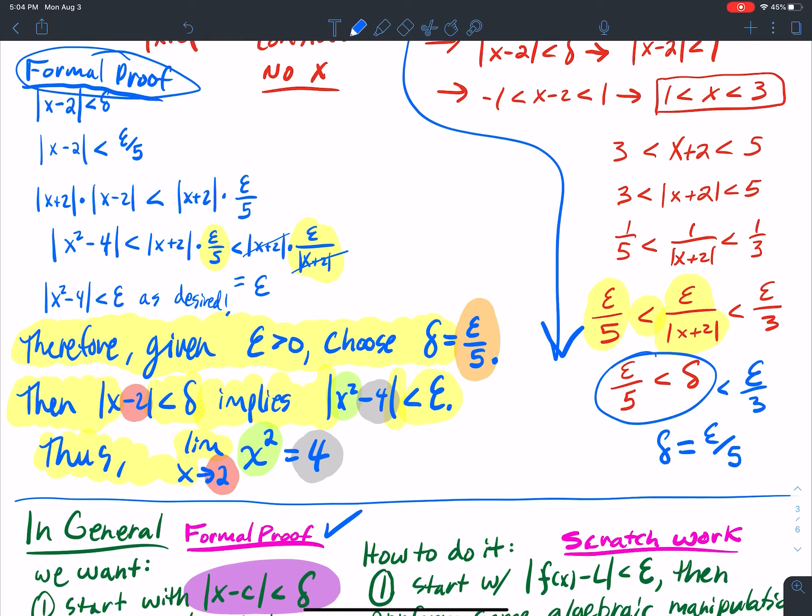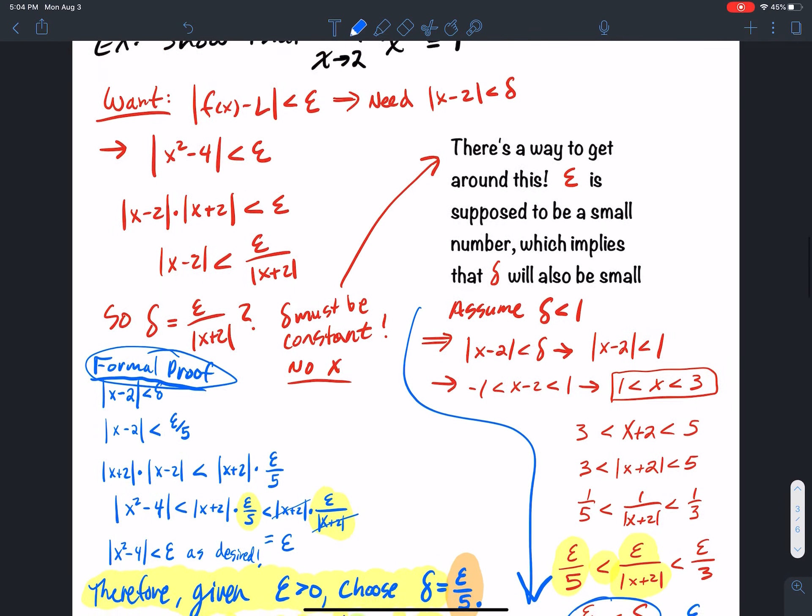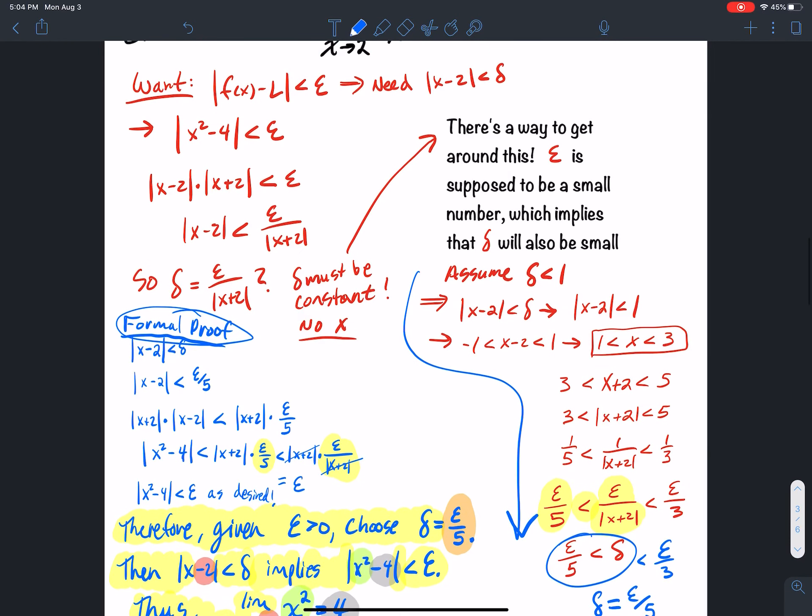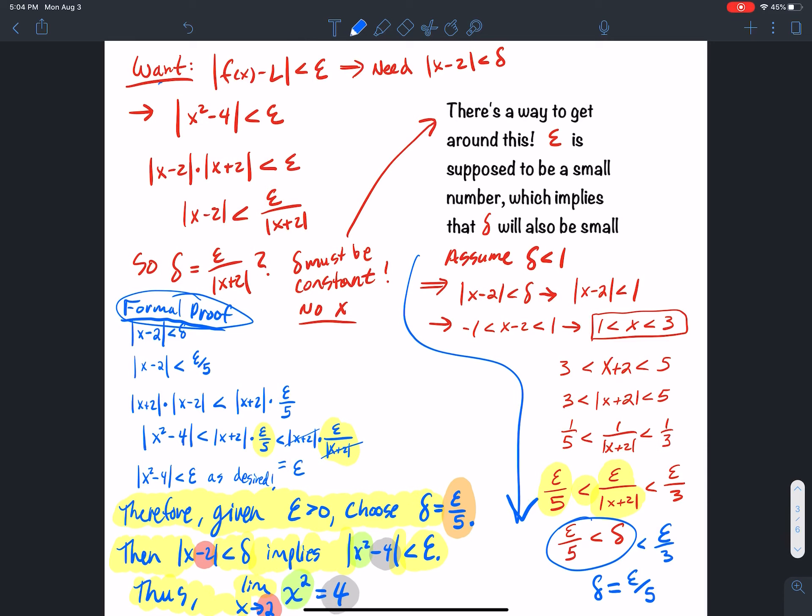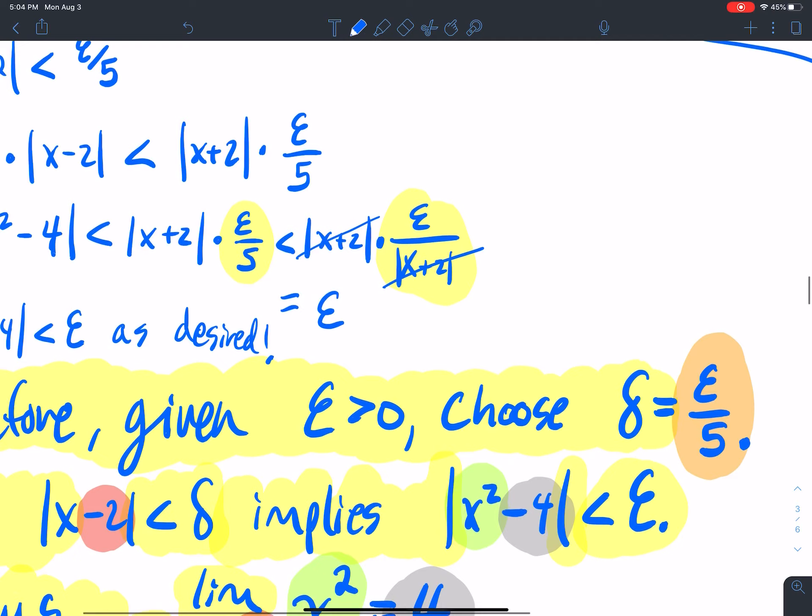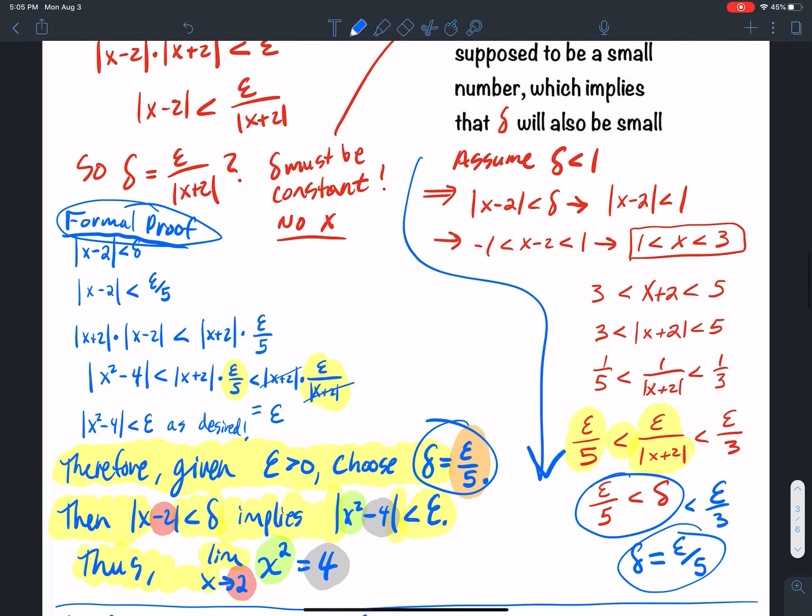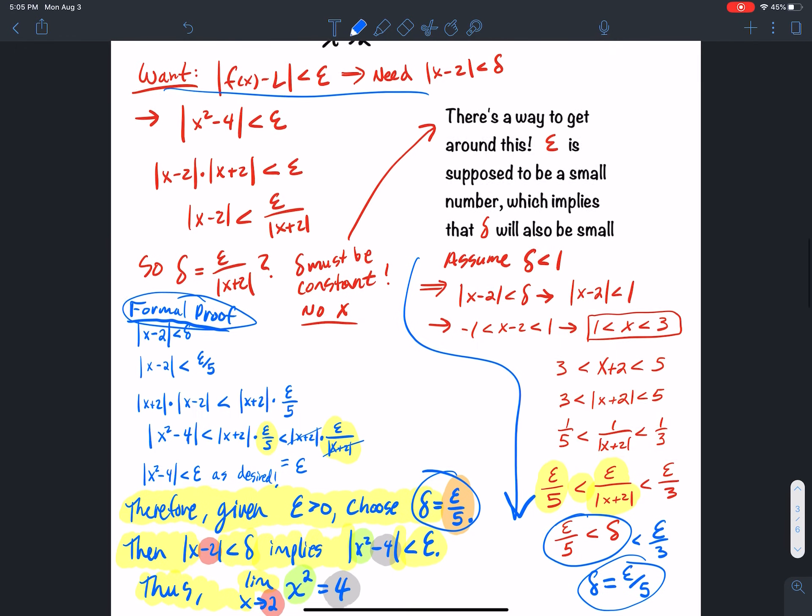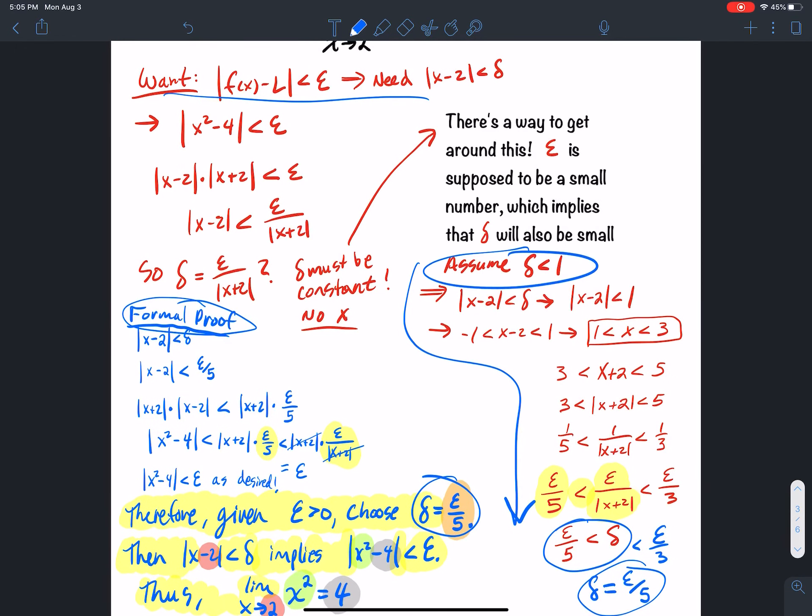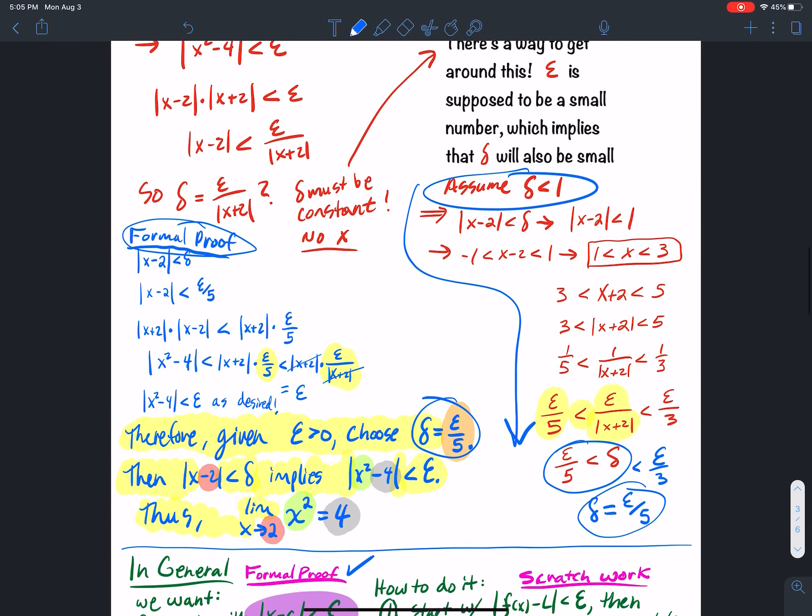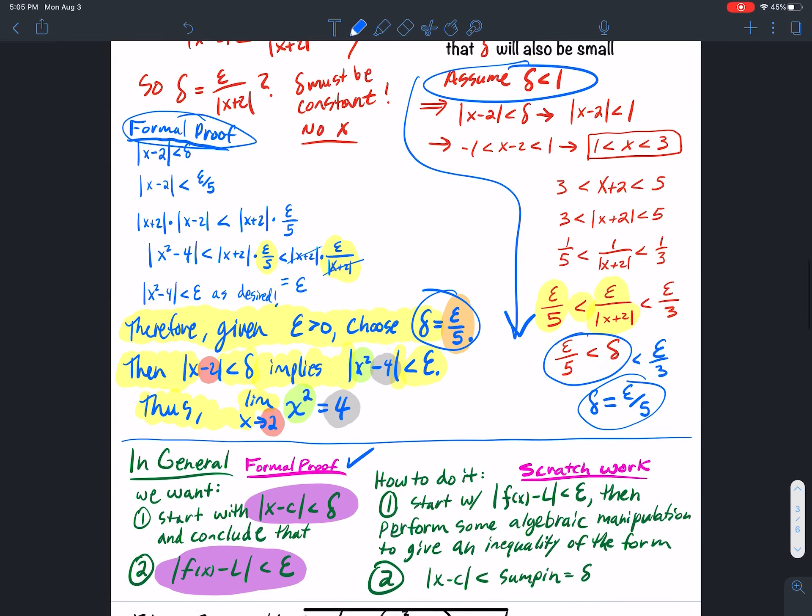I want to see the scratch work. I want to see where you started with, how you got to your choice of delta. Because remember, the scratch work, the whole point of the scratch work, is to get this clever choice for delta. So that's why we do it. Sometimes you got to make restrictions on delta to get to it, but you got to do what you got to do.